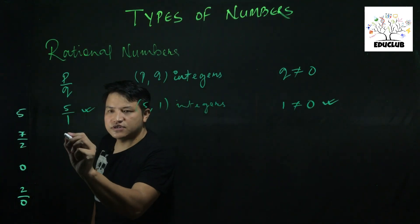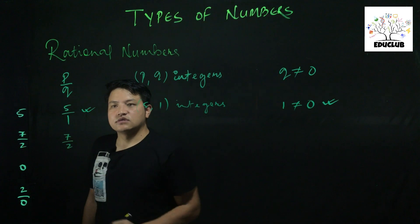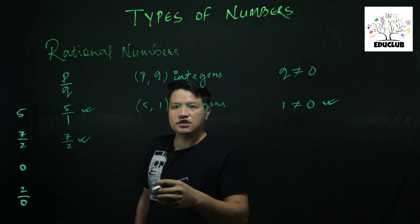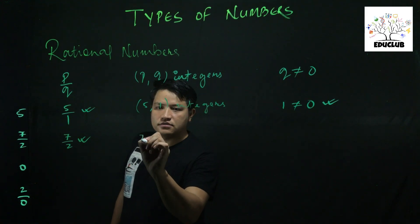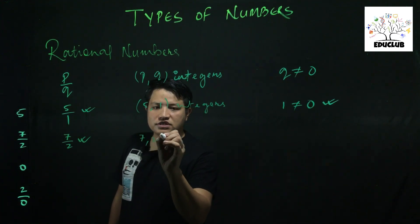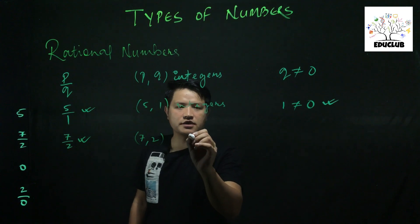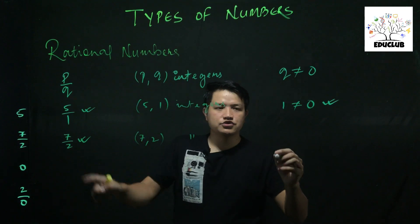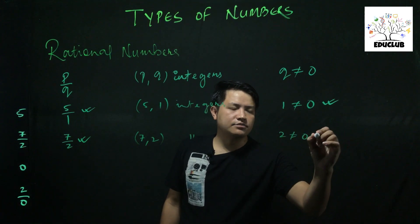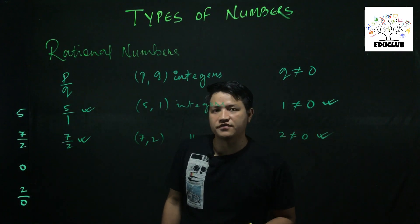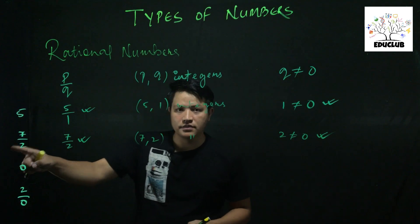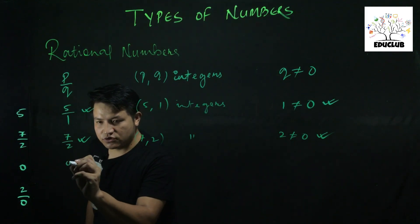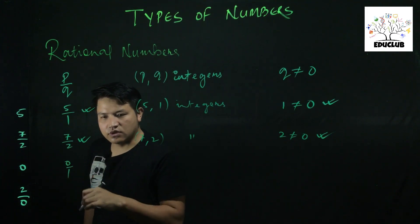Now let's check 7 by 2. It is already in fractional form. First condition satisfied — p by q form. Second condition: 7 is an integer, 2 is an integer — satisfied. Third condition: denominator 2 is not equal to zero — satisfied. So 7 by 2 is a rational number.